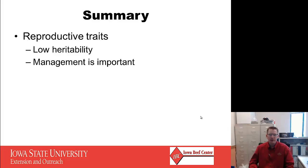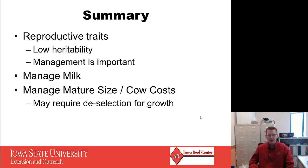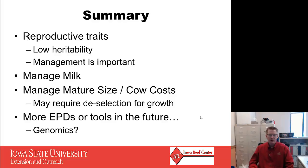In summary, reproductive traits are so important to profitability but are usually low heritability — management is extremely important in keeping them moving in the right direction. We need to manage milk, not maximize it, and also manage mature size and cow costs, which may require some de-selection for growth traits. More EPDs and tools will be coming in this area in the future. Genomics can play a huge role in maternal ability on traits that are really hard to measure, helping producers of all sizes. Hopefully this session has given you good insight into what pieces of information on paper can help your cows get better.